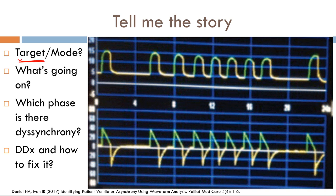The target variable here — looking at the flow scalar — you can see it's preset. So flow is the target variable, making the mode of ventilation volume control ventilation. Looking at the waveform, there are trigger issues firing repeatedly. This is a trigger dyssynchrony, specifically extra triggering.